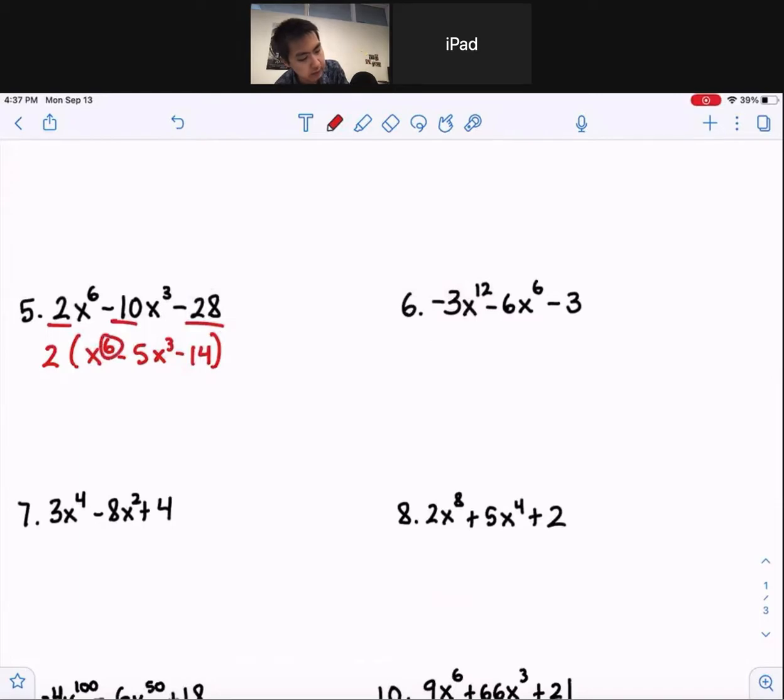Now, x to the 6, that's double of x to the 3rd. So I'm going to attempt to do u-substitution. So if we set u equals to the middle term, or variable, x to the 3rd, we're going to get 2u to the 2nd minus 5u minus 14.